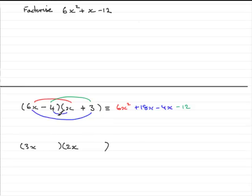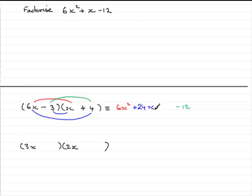You should be systematic and switch the numbers round — that will give you a different answer in the middle. If we put the 3 here and the 4 there, we've still got our minus 12 on the end. For the x terms: 6x times plus 4 is plus 24x, and minus 3 times x is minus 3x, so we get 21x. Switch the signs and you'd get minus 21x — not the middle value. So this is not working.